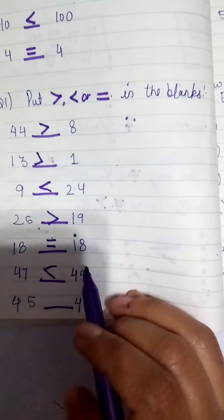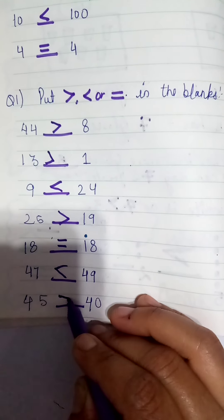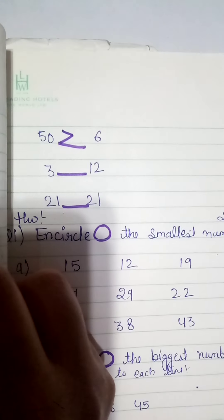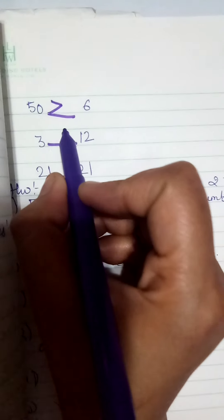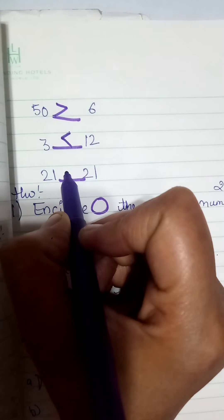Forty-five and forty: which one is greater? Forty-five. Then fifty and sixty: which one is greater? And three and twelve: which one is greater? Students, tell me. Yes, twelve. Twenty-one and twenty-one — let's see.